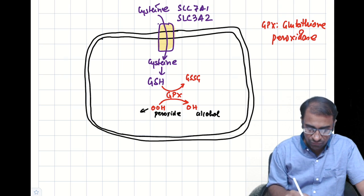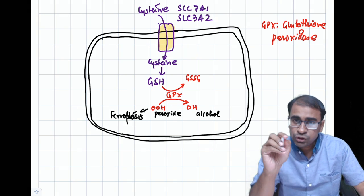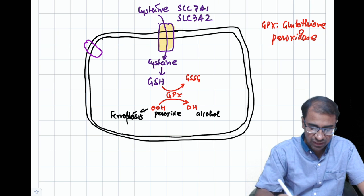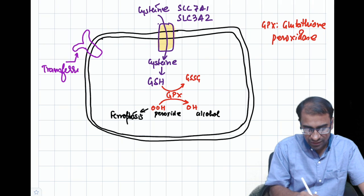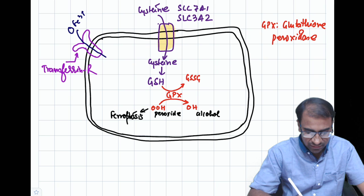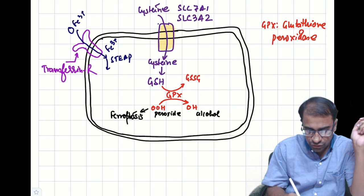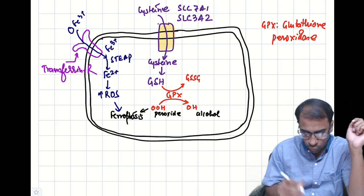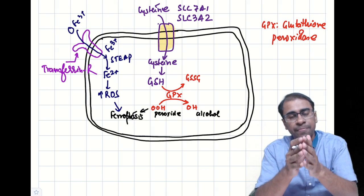The accumulation of peroxides (–OOH) is what drives ferroptosis through very high free radical species. Additionally, transferrin receptors on the cell allow Fe3+ to enter the cell, where a STEAP molecule converts it to Fe2+. This increase in intracellular iron also increases ROS and can lead to ferroptosis.